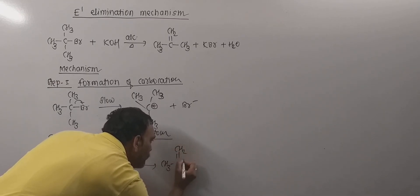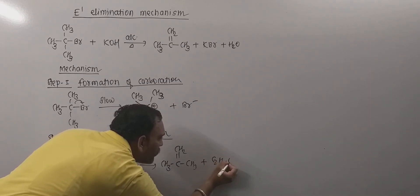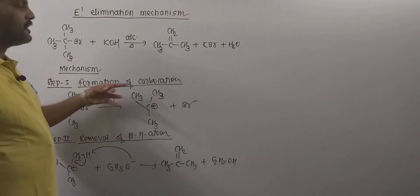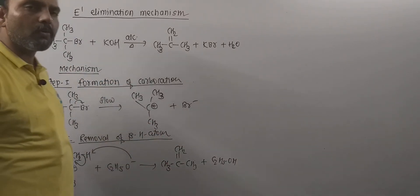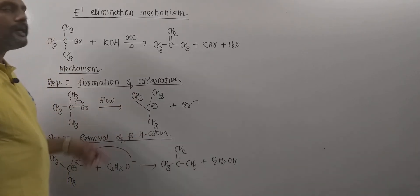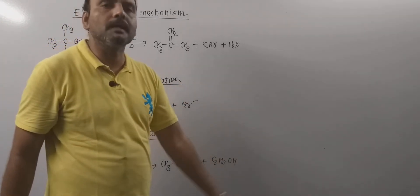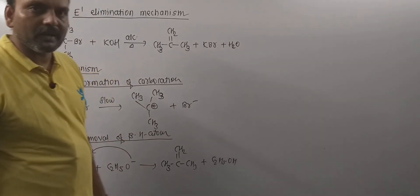Thus, this leads to the formation of an alkene, what we call isobutylene. In this way, this reaction takes place in two distinct steps. The point to be noted is that the carbonium ion is an intermediate in E1 elimination mechanism.